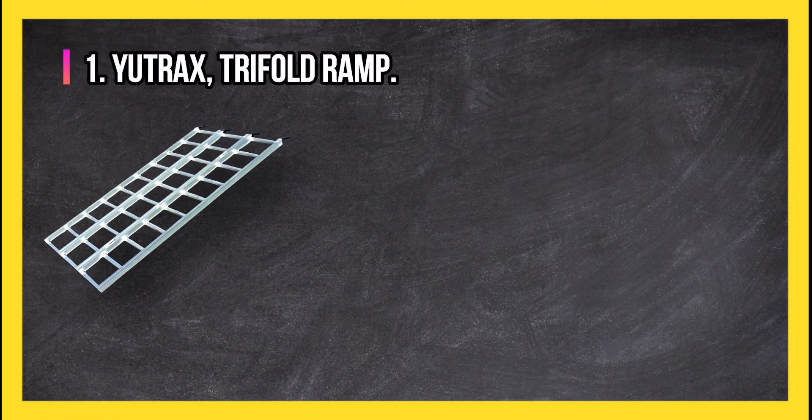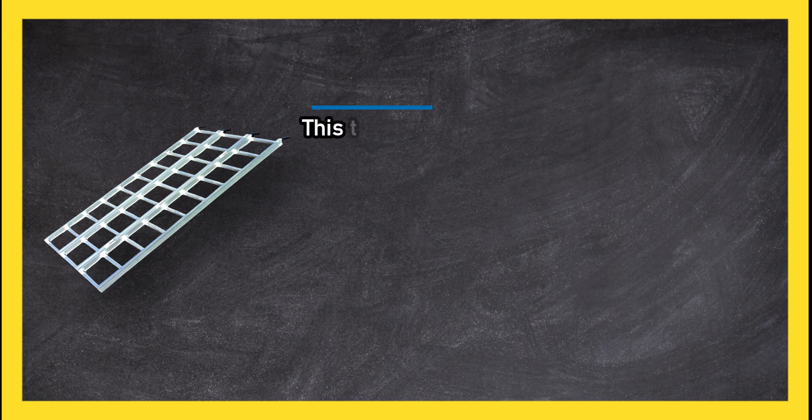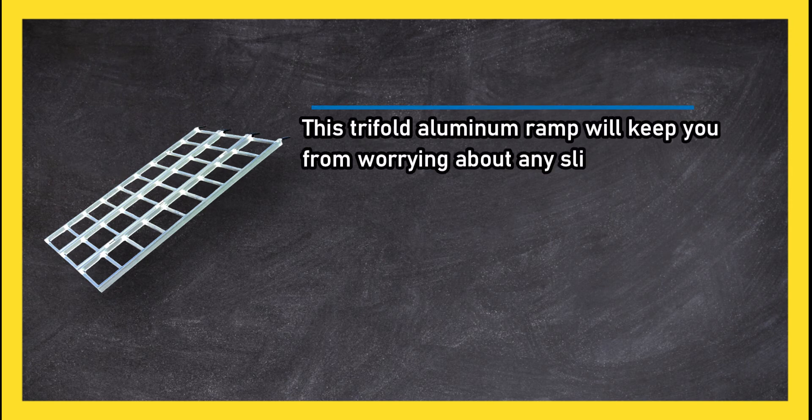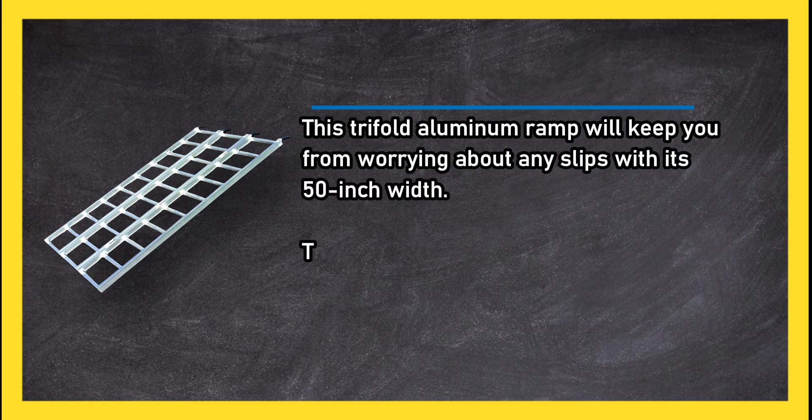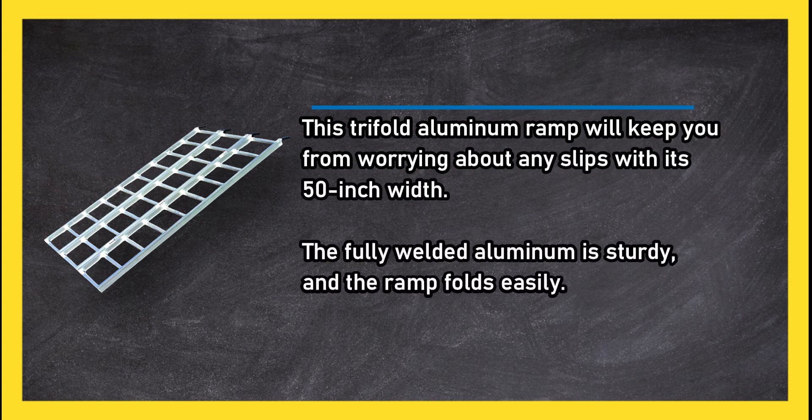At number 1, Utrex Tri-Fold Ramp. This tri-fold aluminum ramp will keep you from worrying about any slips with its 50-inch width. The fully welded aluminum is sturdy, and the ramp folds easily.